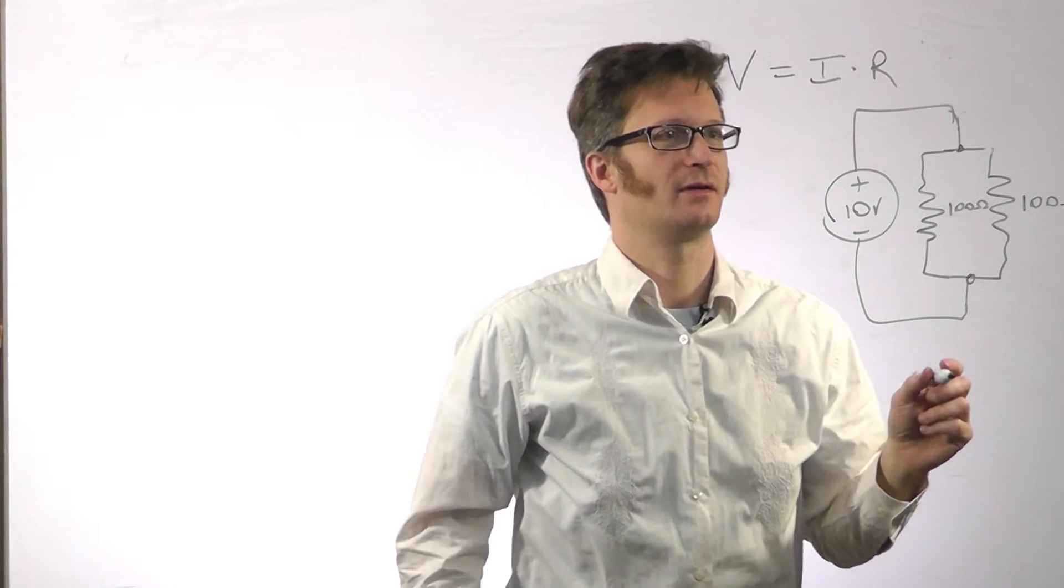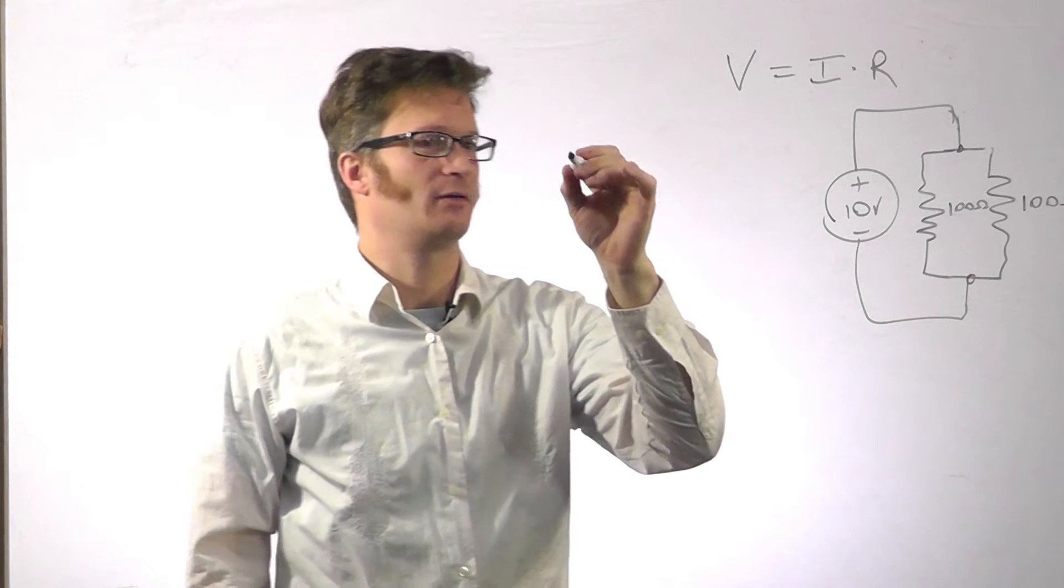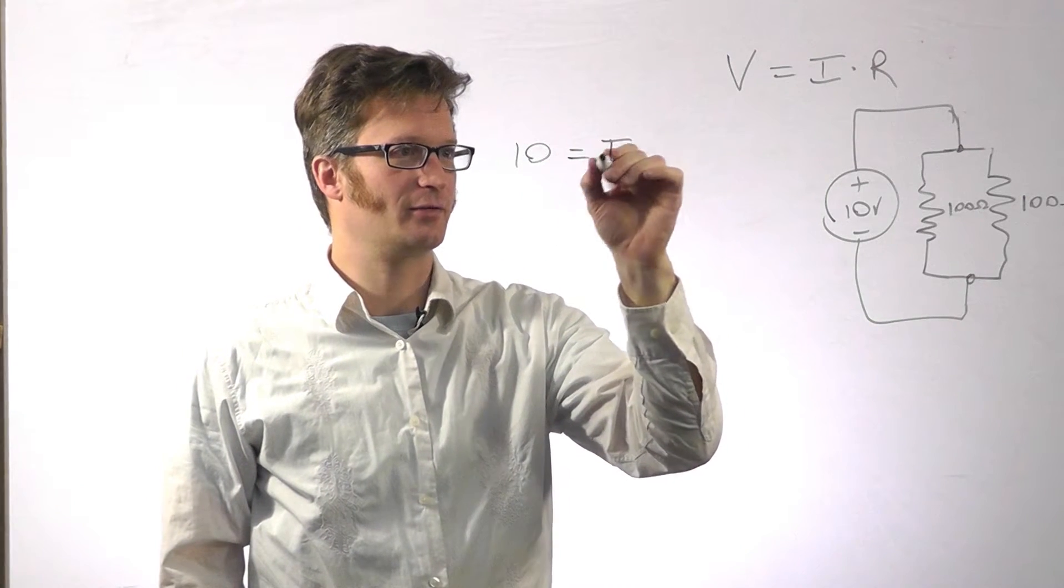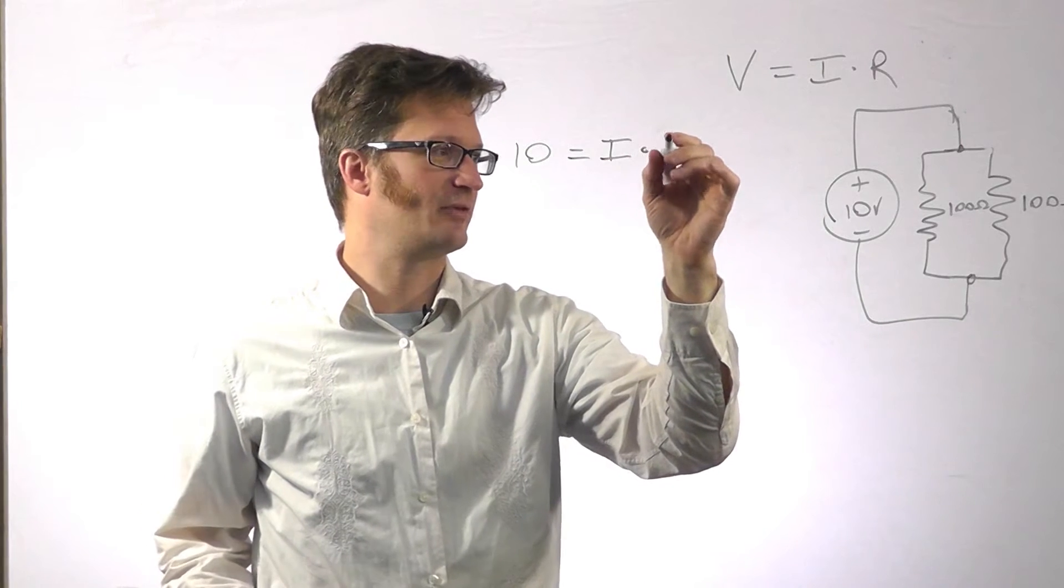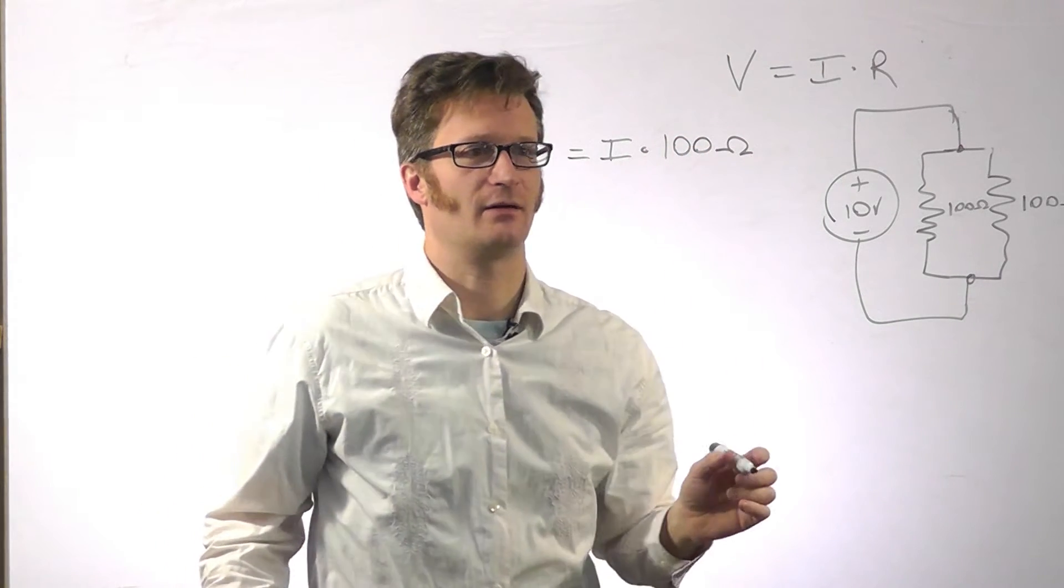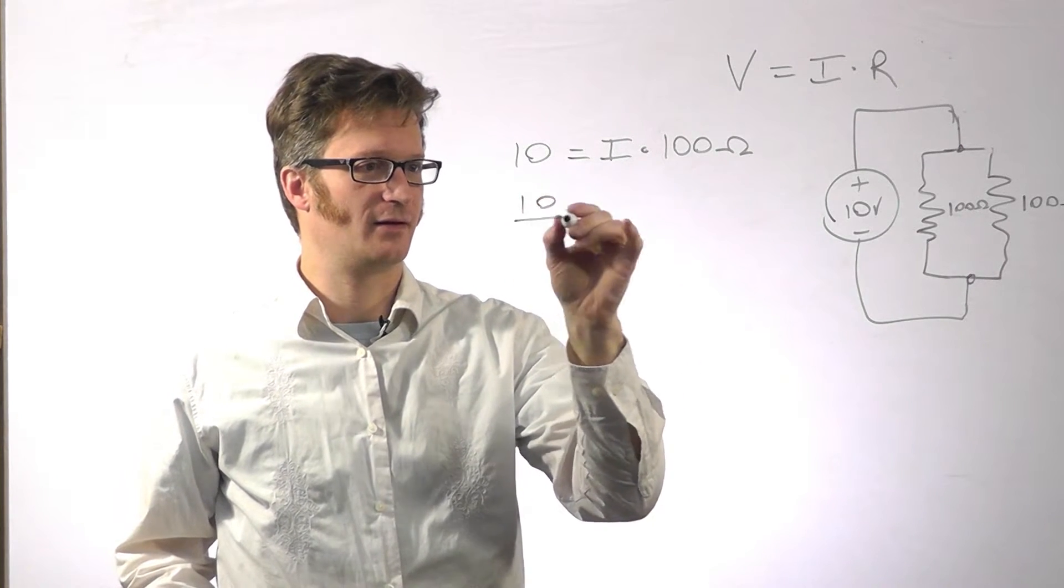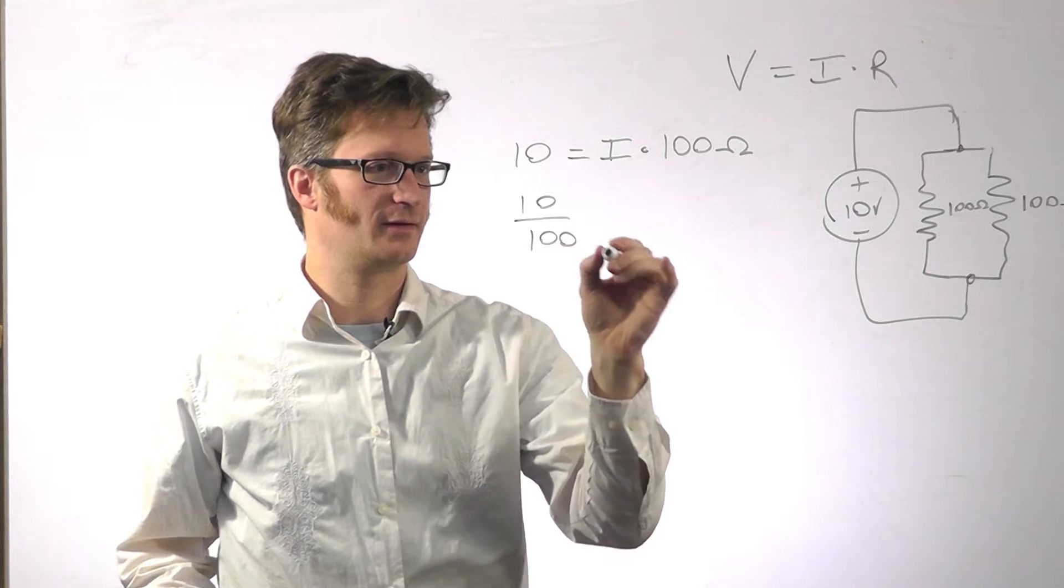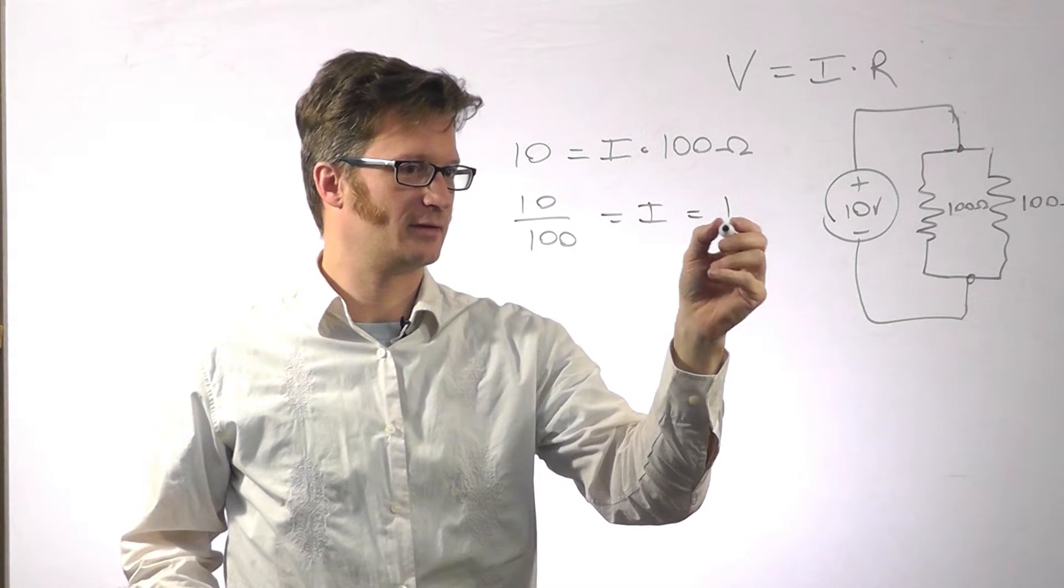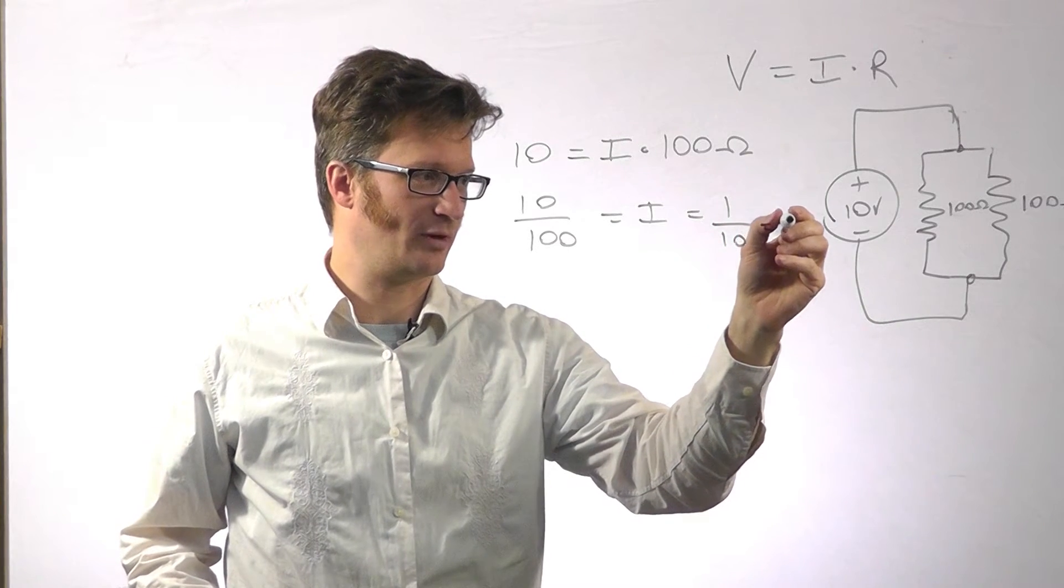And because of Ohm's Law, we can figure out what the current through each resistor is. So we know that 10 equals an unknown current times 100 ohms. And to solve for I, 10 over 100 equals I, which equals 1 tenth. And that's 0.1 amps.